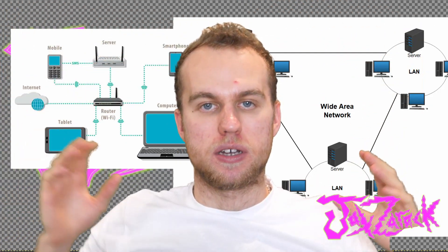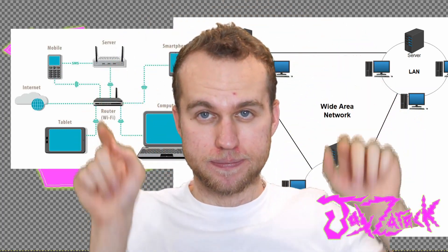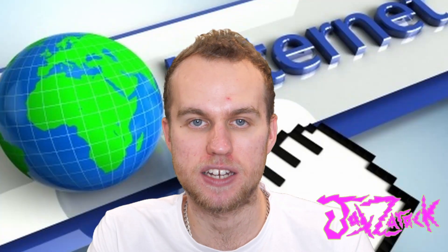As computers became more advanced, a way for them to communicate with each other was developed: cables. A local area network is a low number of computers connected to each other within a small area. A wide area network is a collection of connected local area networks, with the biggest being the internet. To connect all these billions of devices, there are thousands of miles of cables laid across the world, some across the sea floor.